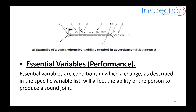If you have a welding detail, you will find at the tail the number of the welding process — like the one shown here, which is 111, indicating manual metal arc welding. Another definition we have is essential variables, which are conditions in which a change, as described in the specific variable list, will affect the ability of the person to produce a sound joint. This means that if we have specific parameters and we change those parameters, it will affect the performance of the welder and may affect the mechanical properties of the joint.